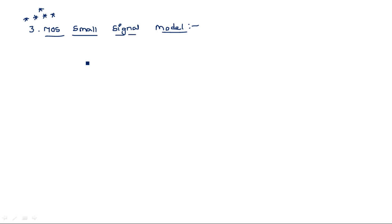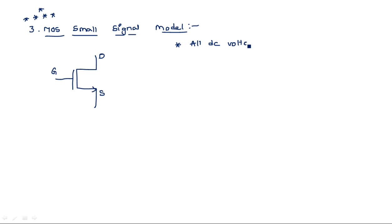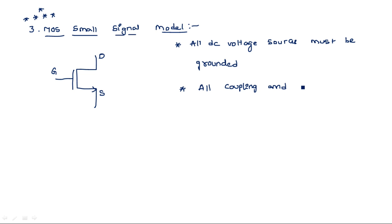What is the equivalent model of this particular MOS transistor in the small signal model? There are two important points we should keep in mind when drawing the small signal equivalent model. First, all DC voltage sources must be grounded. Second, all coupling and bypass capacitors must be short-circuited.